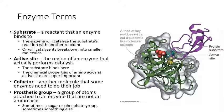As we start getting more into enzymes, let's go over some basic vocabulary. First, a substrate is a reactant in a chemical reaction that the enzyme is going to catalyze — the enzyme is going to bind to it. The first step in catalyzing a reaction for an enzyme is finding its substrate and binding it.